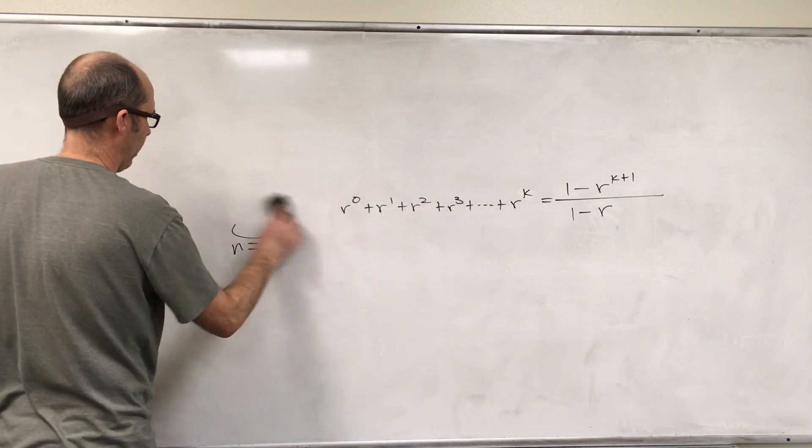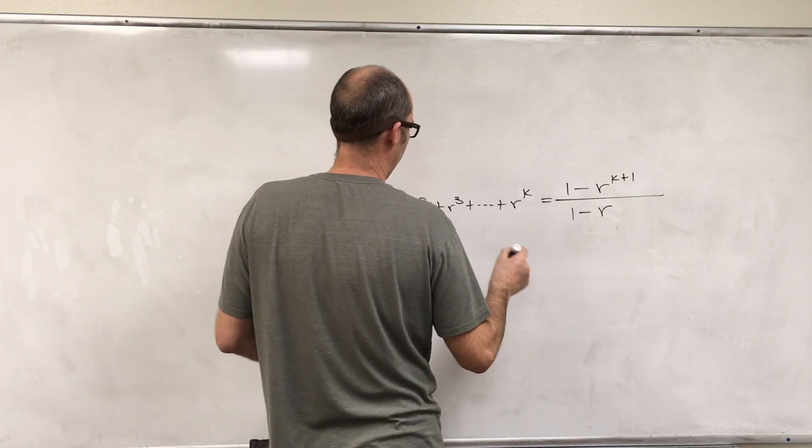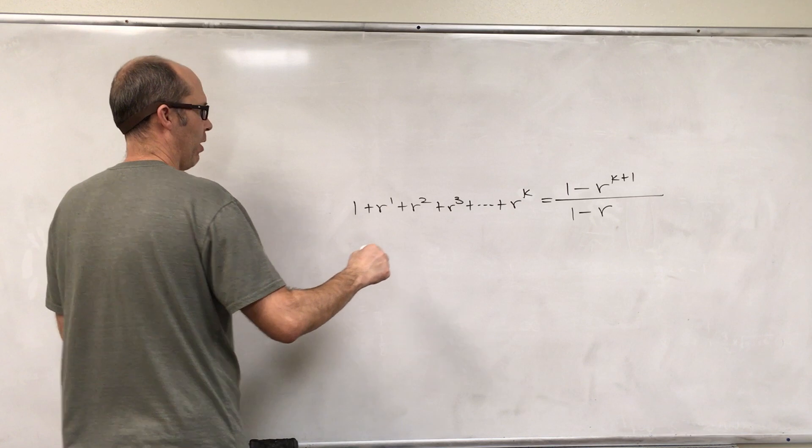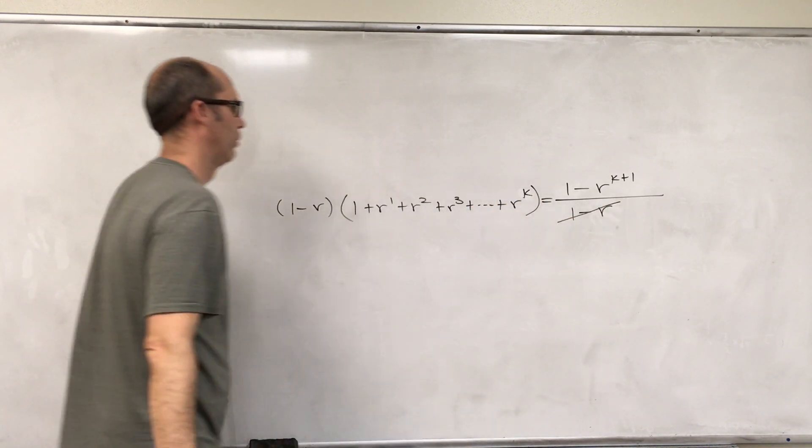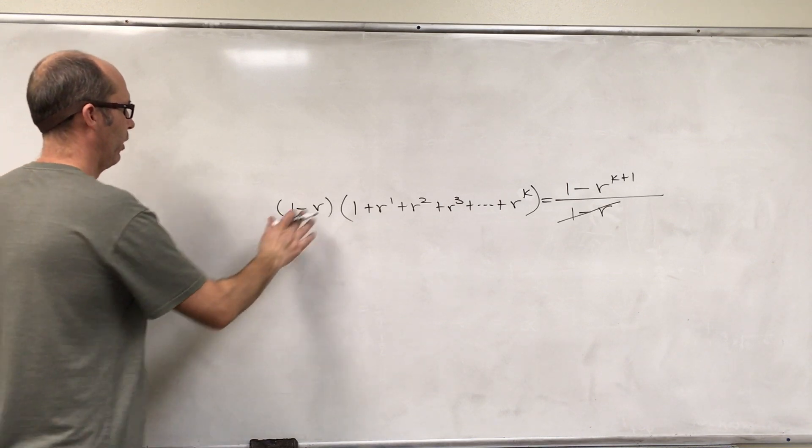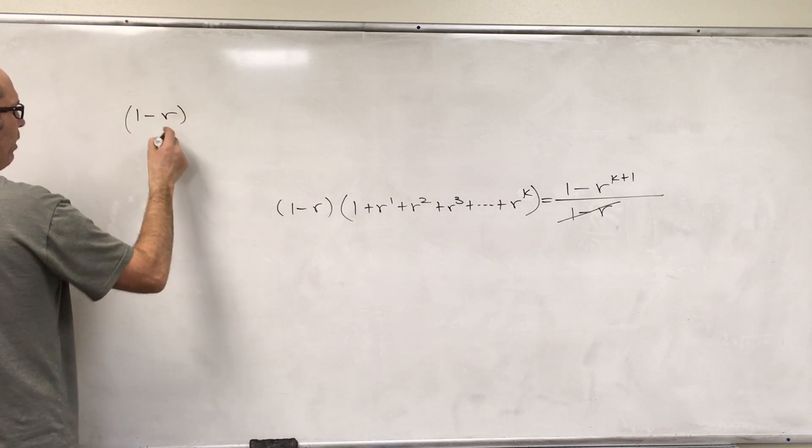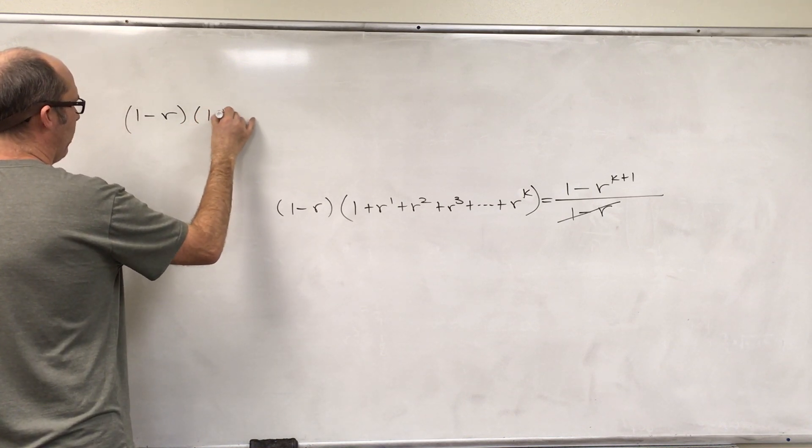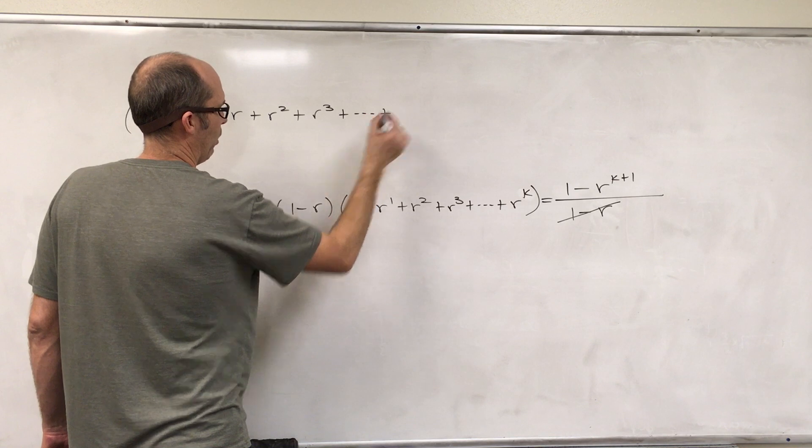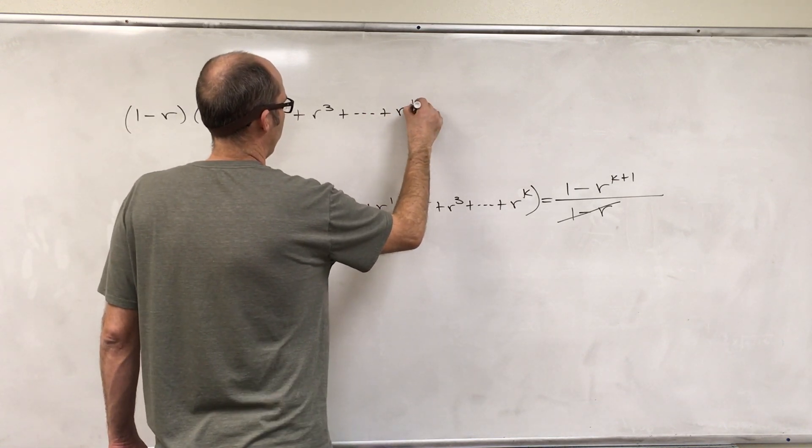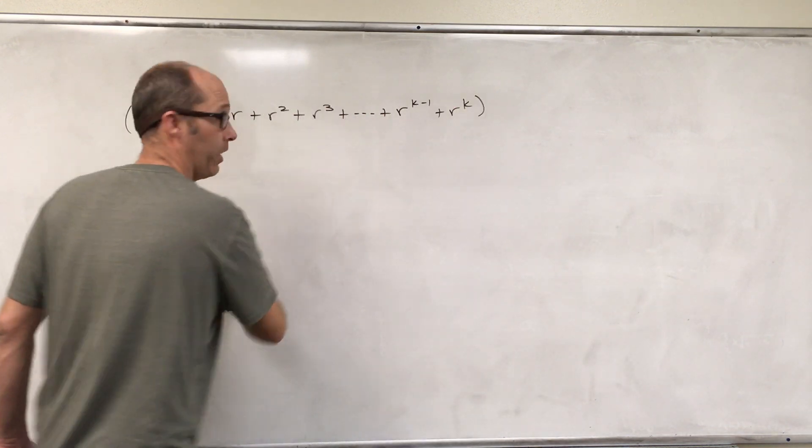Alright, I can prove this to you in another way. Let's rewrite R to the 0 as 1. Now, if we put the 1 minus R here, then we can actually prove this result. This will only work if R is not equal to 1. In any case, let's try this out. 1 minus R, you got 1 plus R plus R squared plus R cubed plus R to the K minus 1 plus R to the K. And if you don't quite get everything that I'm doing here, not a big deal. It doesn't really matter.